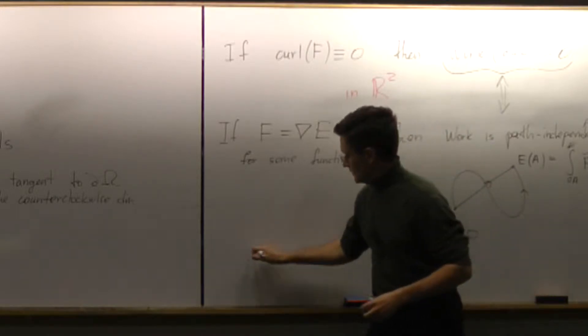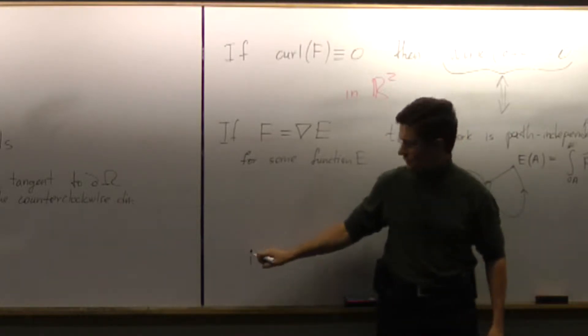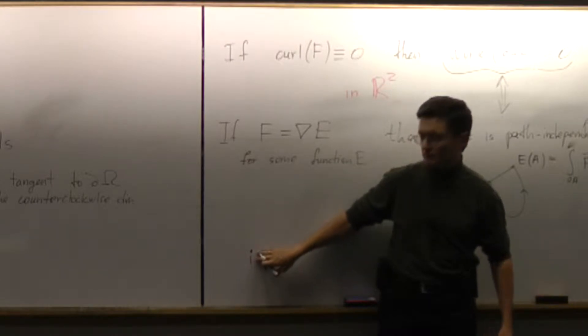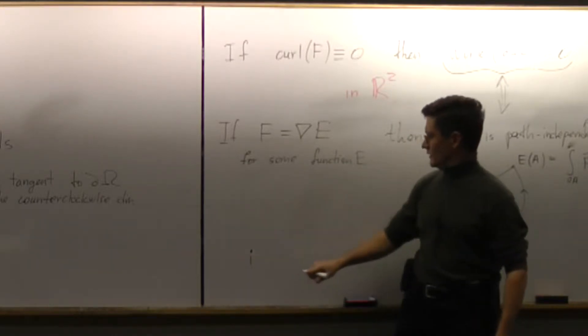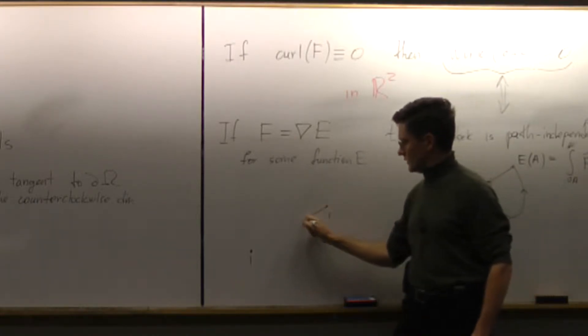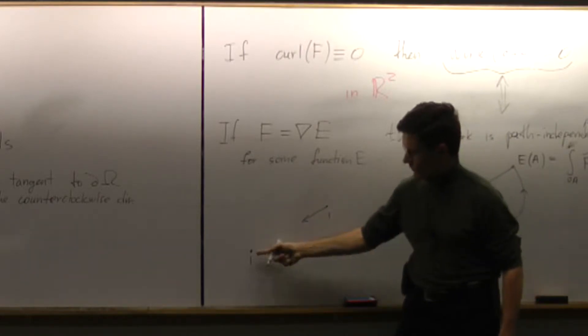If I have a massive object of mass one somewhere here, and I put another object of mass one somewhere there, what is going to be the gravity force acting on this object, attracting it to the first one?